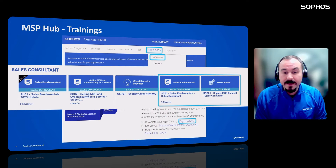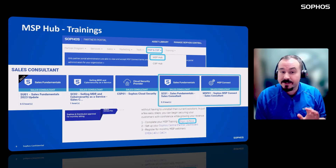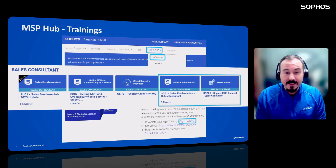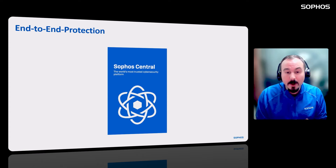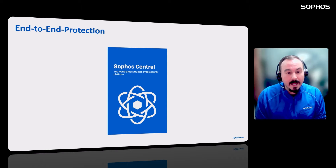The MSP hub also has a lot of other really good resources, and we'll revisit the partner portal to look at those. But for the moment, let's go back onto the program itself and talk about how we do our licensing and what types of products are available — remembering we're talking about one vendor, one program, one dashboard.